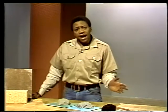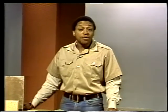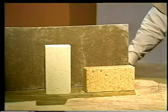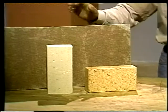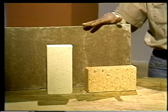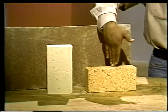We've divided the common types of refractory into two groups: those that are already shaped, and those that can be shaped by the worker during installation. Let's take a look at some that are shaped by the manufacturer: insulating block, insulating brick, and fire brick.